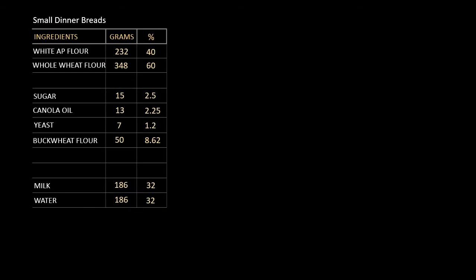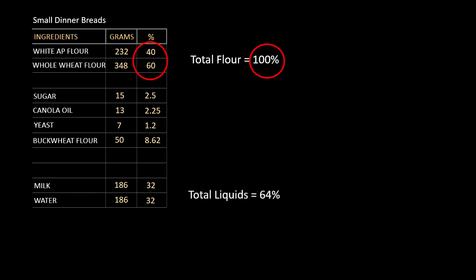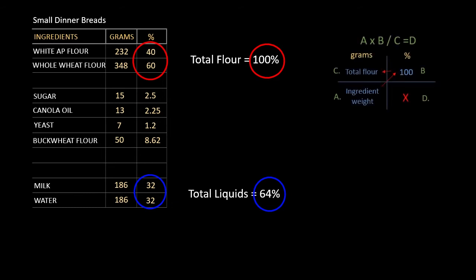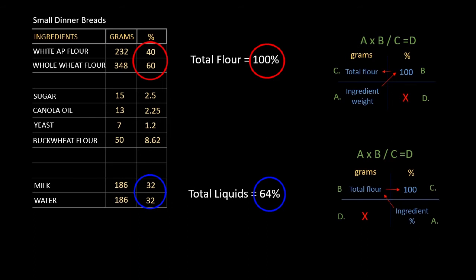So we're going to make some small dinner bread. We've got a formula right here. We take a look at both flours — we've got all-purpose and whole wheat flour, and that combined is 100 percent. Our total liquids — we've included milk, that's a major liquid — and the total liquids is 64 percent. To figure out percentages it's ingredient weight times 100 divided by total flour. The other way: ingredient percent times total flour divided by 100 gives you the quantity in grams.